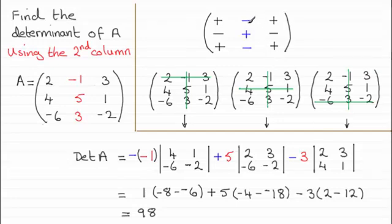So the signs that we use for this second column will be minus, plus, minus. As you can see, I've written them in here. And then we've got the elements in that column, minus 1, 5 and 3.